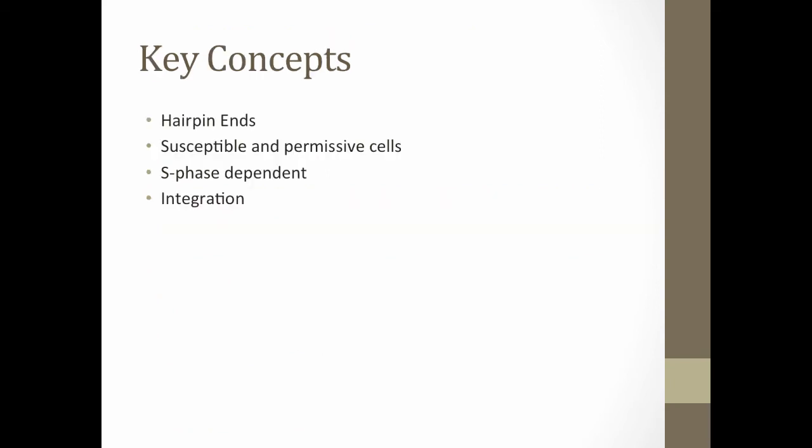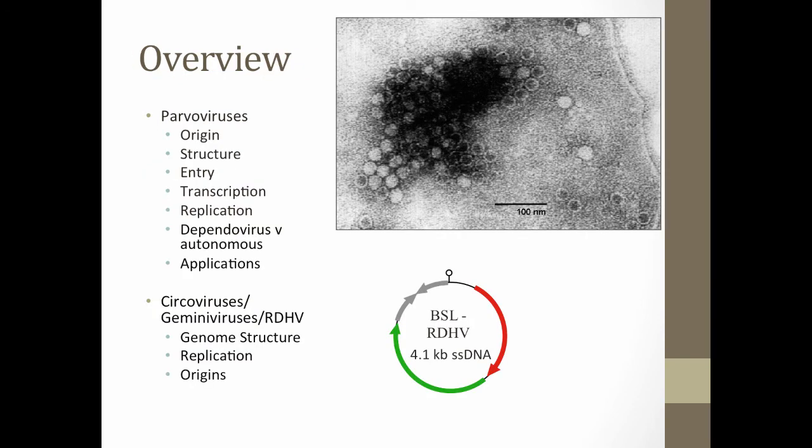Key concepts for the linear single-stranded DNA viruses: hairpin ends are used to partially solve the DNA end replication problem; we discussed the difference between susceptible and permissive cells — susceptible cells aren't necessarily permissive, due at least in part to the need to get into the nucleus; these viruses are dependent on S phase; and we briefly looked at integration of adeno-associated viruses when they don't have co-infection with a helper virus.